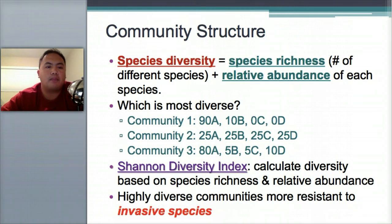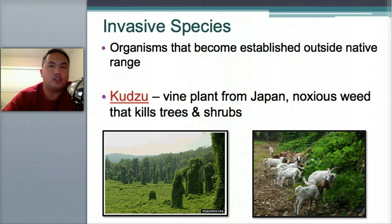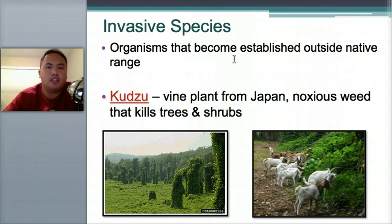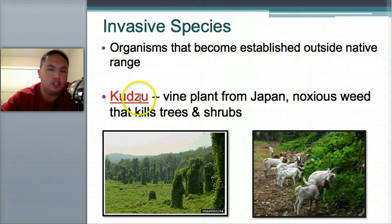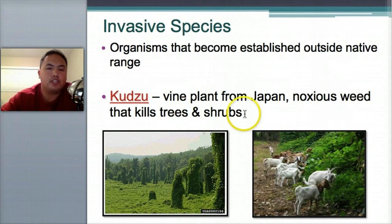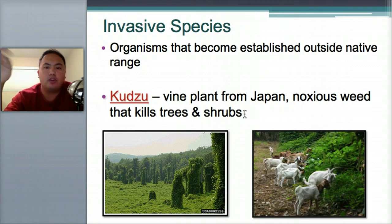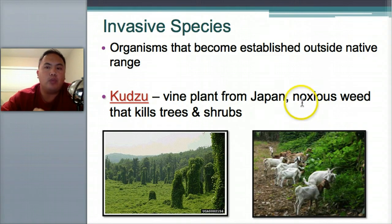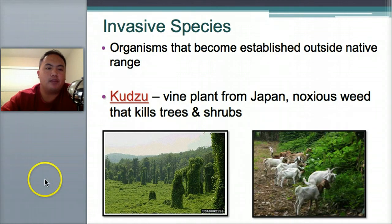Invasive stands for invasion — species outside of their native range, from a different country or location, that don't belong in the area being analyzed. For example, kudzu is a vine plant from Japan with a noxious weed that kills trees and shrubs. It was brought to the United States and eventually killed trees and shrubs across the country.